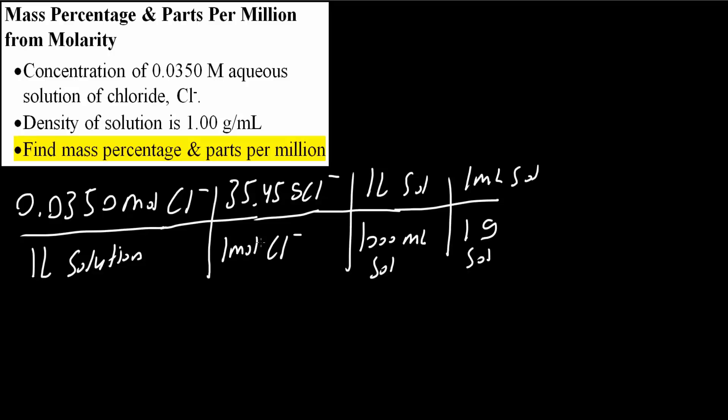Now let's check our units. Liter of solution would cancel, mil of solution would cancel, and grams of Cl minus would cancel, leaving grams of Cl minus in the numerator. This equals 0.00124 grams of Cl minus divided by grams of solution. Now this is what we have.